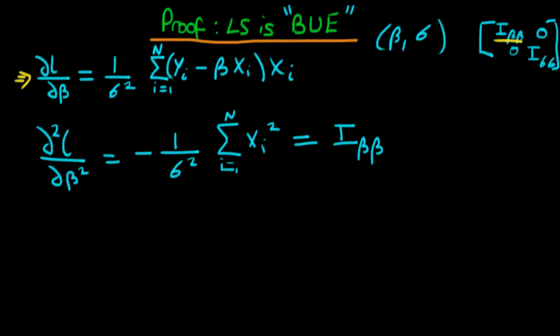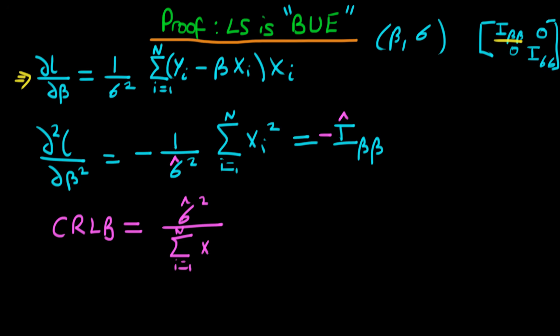To derive the asymptotic variance of the maximum likelihood estimator of beta, we take the inverse of I_beta_beta. Since it's just a scalar we simply invert it — noting the minus sign from the information matrix definition, and replacing sigma squared with sigma-hat squared. The Cramér-Rao lower bound is therefore sigma-hat squared divided by the sum from i equals one to n of x_i squared.